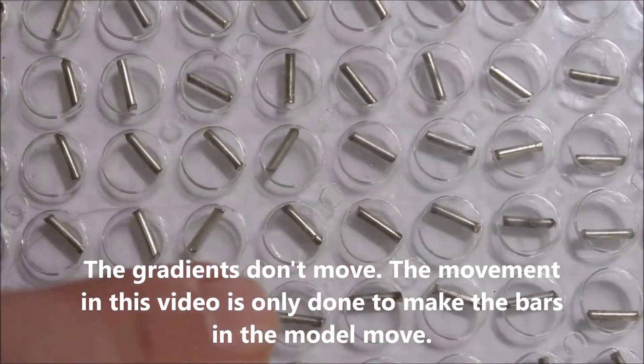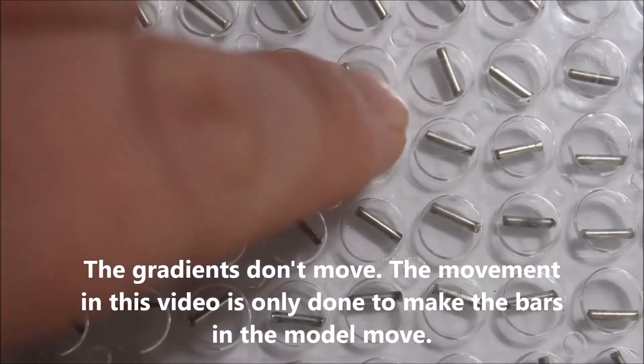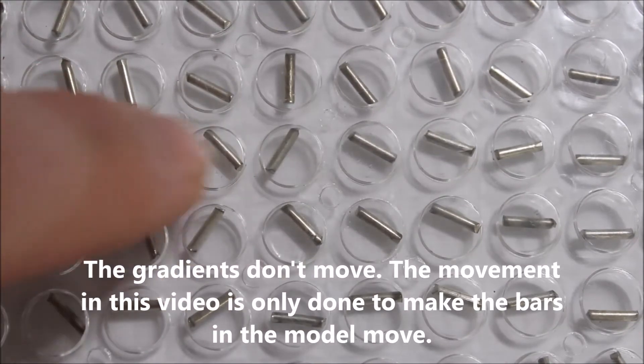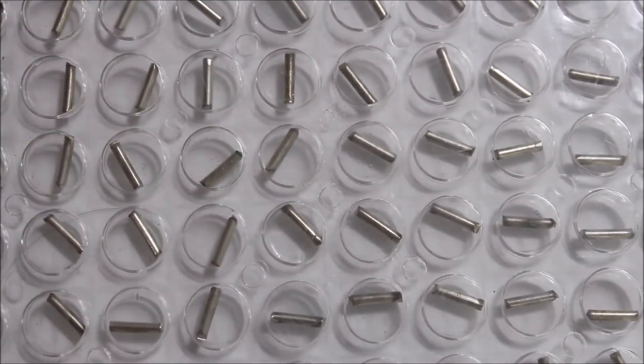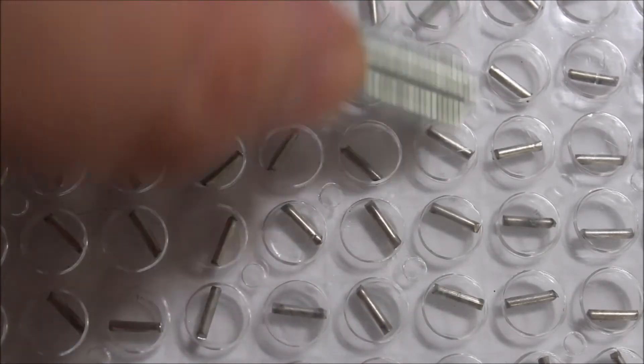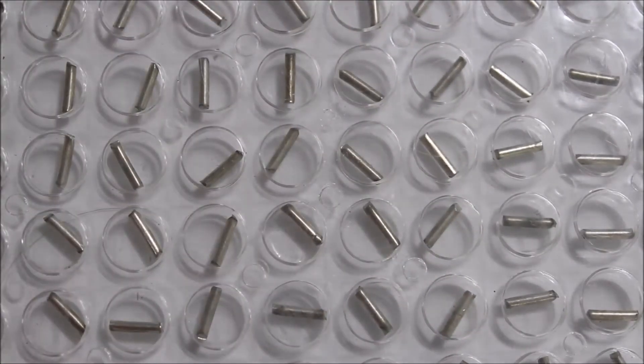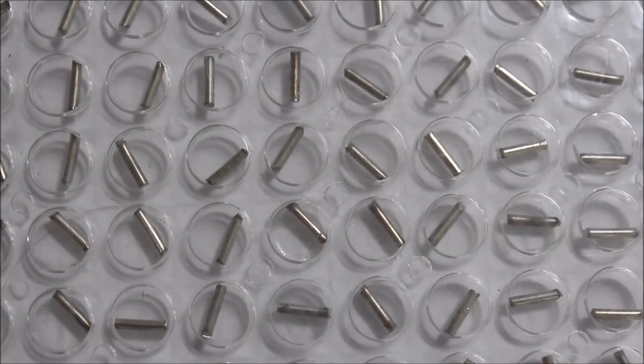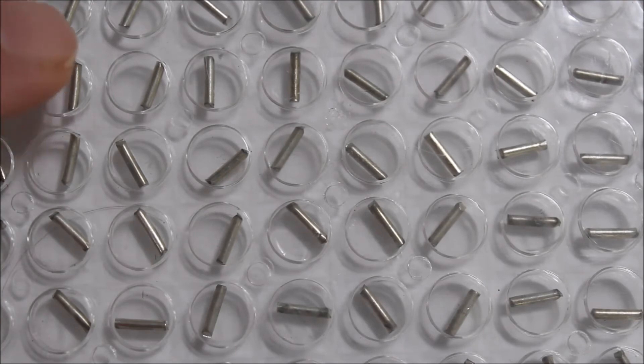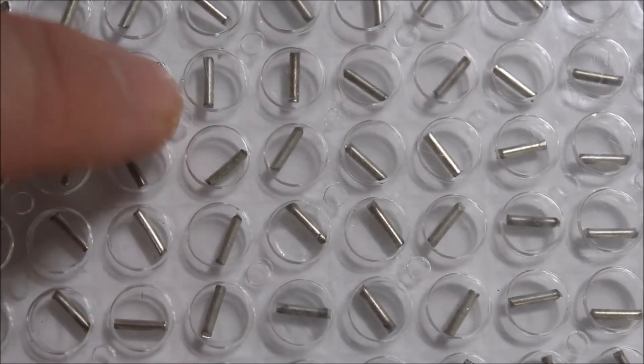So if we move this across, the center is still pretty much where it was, but the other ones have changed position in response to this faster slow gradient that had been placed on it. Now because each discrete area has a different phase and frequency...